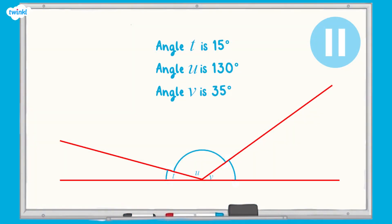All complete. Let's have a look at the answers. Angle T is 15 degrees, angle U is 130 degrees and angle V is 35 degrees.